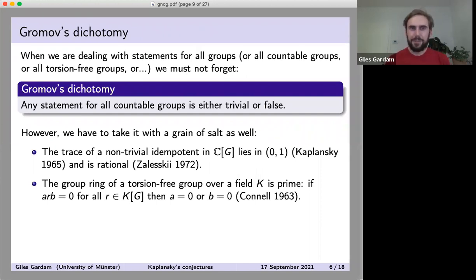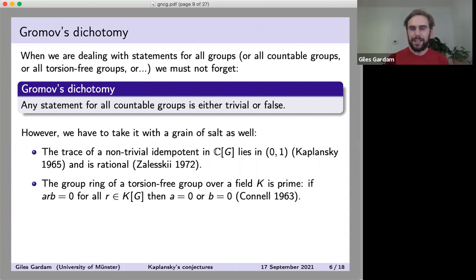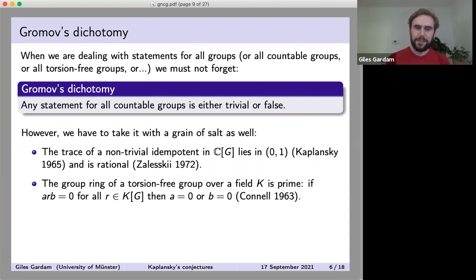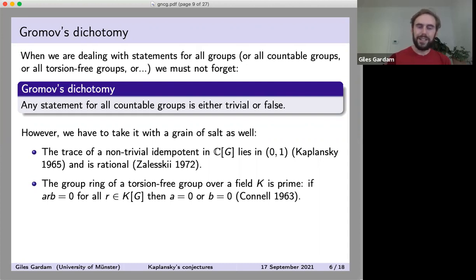Here are some specific counterexamples to the meta-theorem about group rings. First: if we take a non-trivial idempotent in a complex group ring — not assuming G is torsion-free — then its trace, which is the coefficient of the identity element, is a rational number, as proved by Zalesskii. Second, due to Connell: if we take a group ring of a torsion-free group, then it's prime in the ring-theoretic sense, meaning if aRb = 0 for every element R in the group ring, then at least one of a or b is zero.